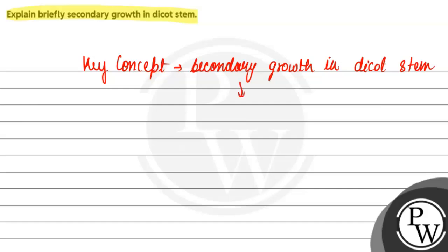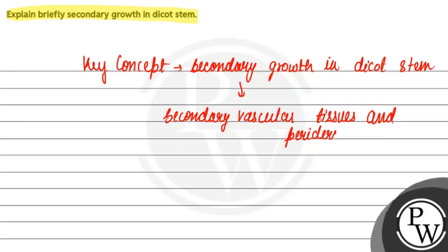Secondary growth in most of the dicot stem involves secondary vascular tissues and periderm, which increase the thickness of the stem. Vascular cambium plays a key role in normal secondary growth in dicot stem, leading to an increase in diameter of the plant stem.